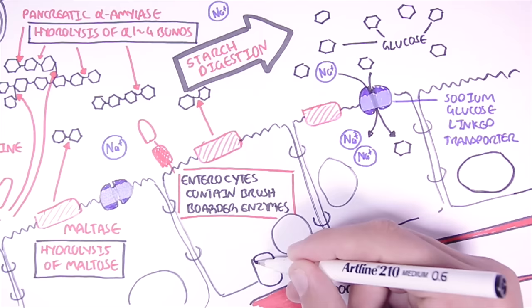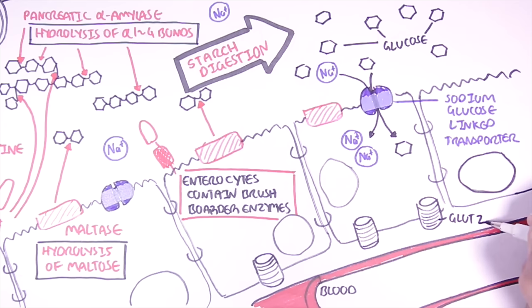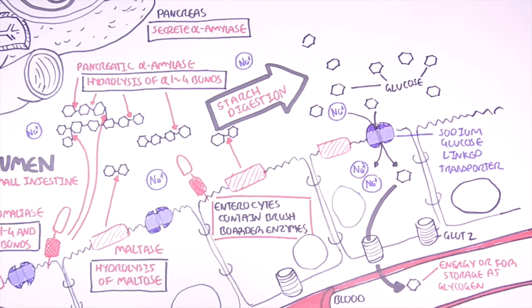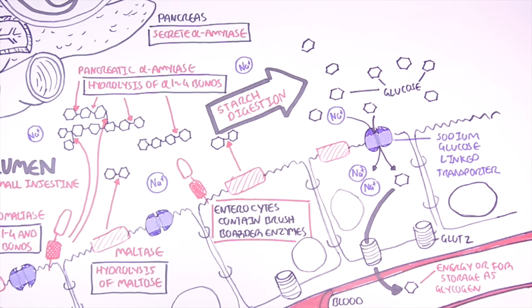Once glucose is within the cell it can be reabsorbed by the bloodstream through a GLUT2 transporter. The GLUT2 transporter is found on the basal surface of the enterocyte. When glucose is in the bloodstream it will increase blood glucose levels. The glucose can be used as energy by tissues or it can be stored away in the liver as glycogen. So that was the fate of starch. Once it is broken down in the small intestine it is absorbed by the body and can be used as energy.